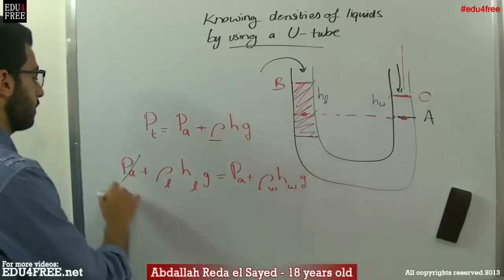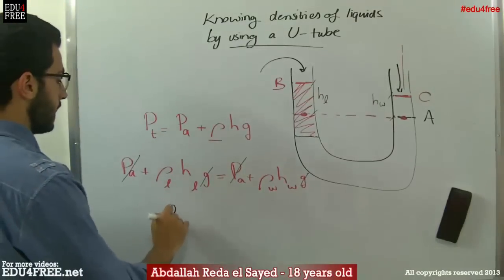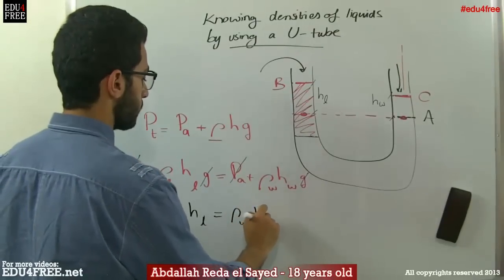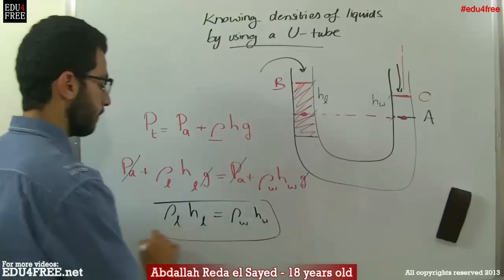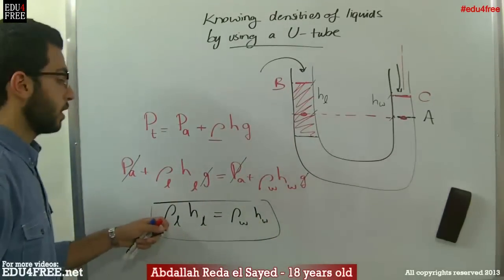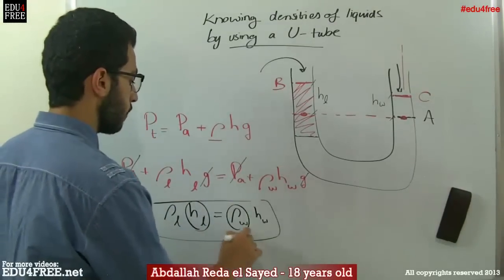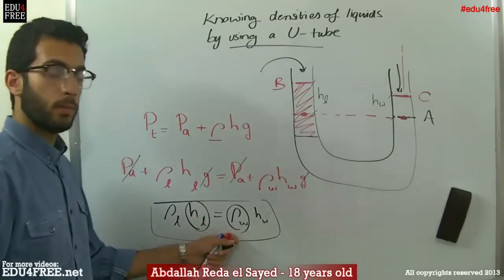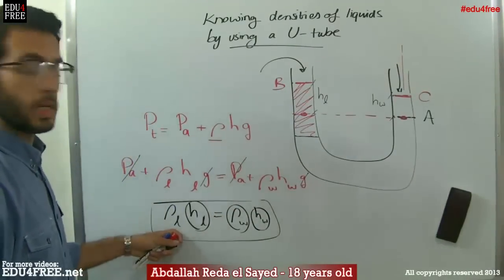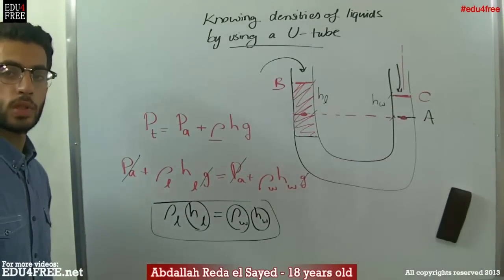From the equation, the atmospheric pressure terms cancel out on both sides, and we get a simplified relation. From this relation, we can calculate the density of the liquid whose density we don't know. We know the height, we know the density of water — that's 1000 kg per cubic meter — and we know the height of water. Then easily we can get the density of the unknown liquid. And that's it for today. Until next time, thank you for watching and see you.